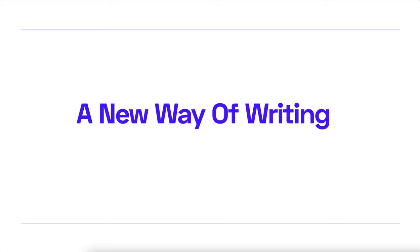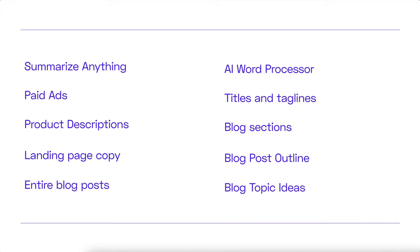Here are just some of the things we're able to do with RevSpot. You can summarize anything — you can summarize entire books. You can generate paid ads, product descriptions, landing page copy, entire blog posts, titles and taglines, blog sections, blog post outlines, blog topic ideas, marketing copy like unique value proposition, pain-gain claims, product pitches, product headlines — anything. And we've also built an AI word processor — basically Google Docs, but with AI in it.